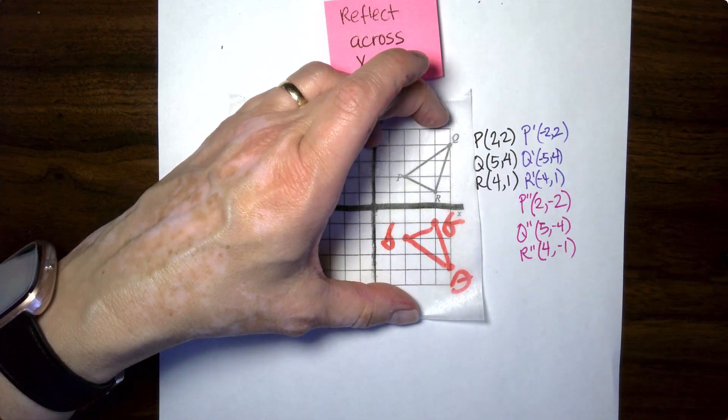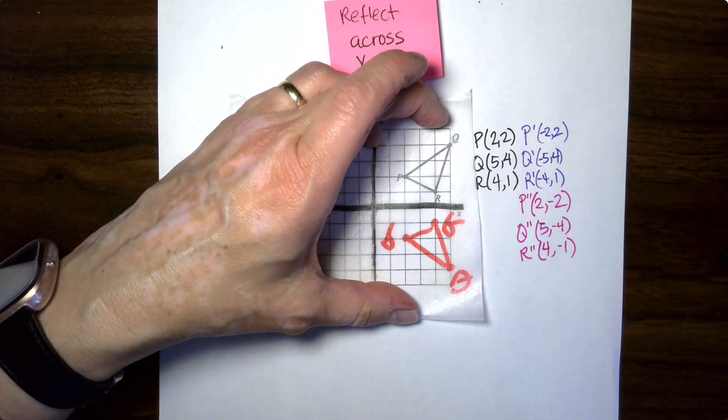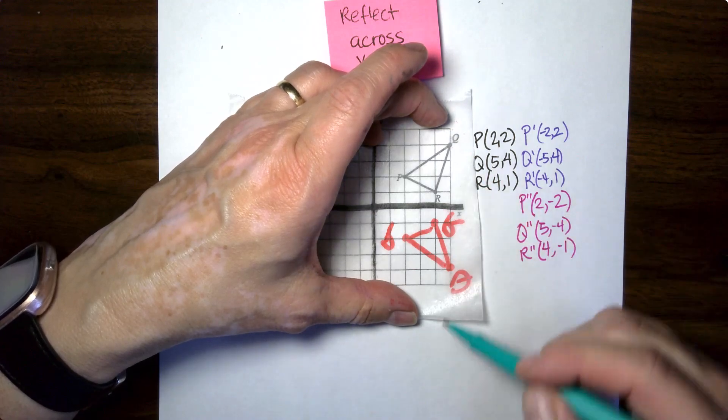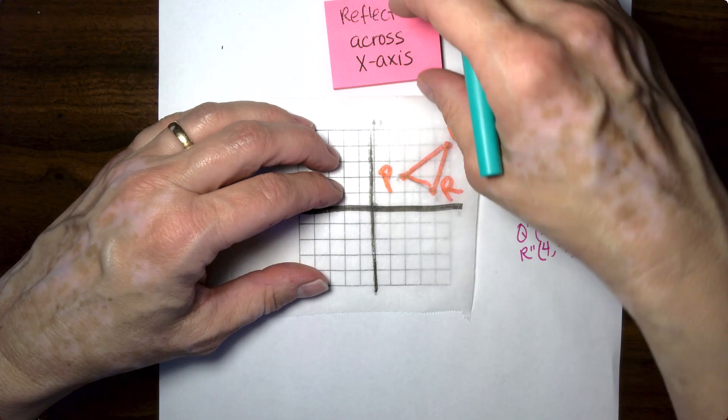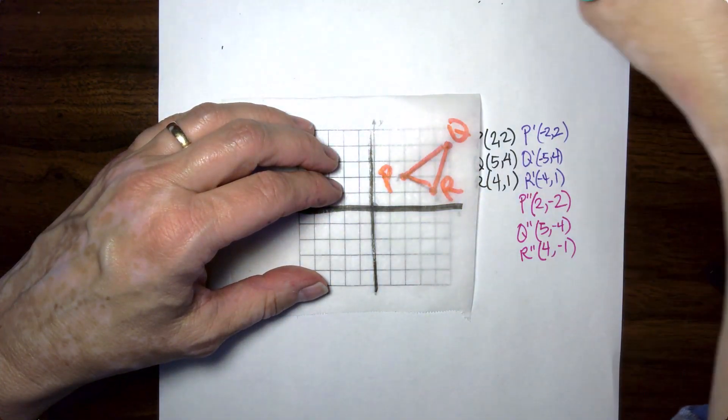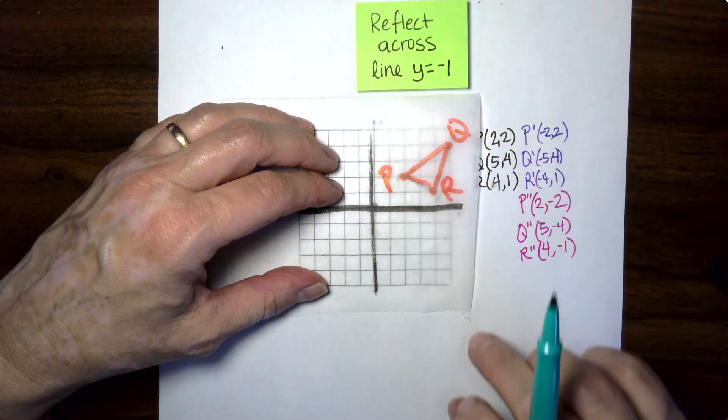Alright. Now, and again, there's going to be people who totally get the algebra shortcuts really fast, how to change the points without doing the actual flip. But most people are going to need to see what they're doing. And it gets a little tricky when we have to start doing something like this. Reflect across the line Y equals one.